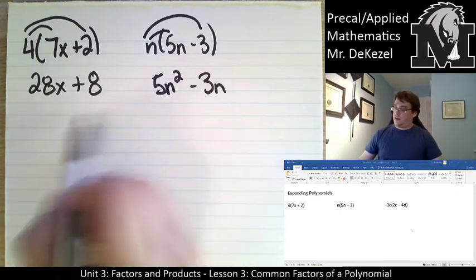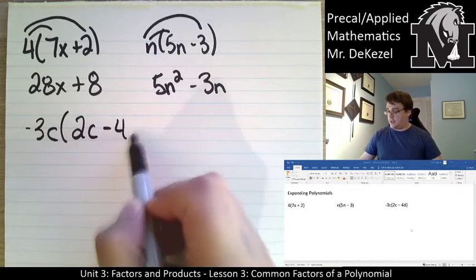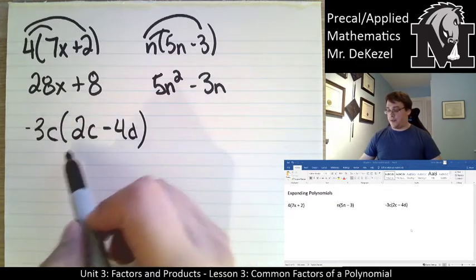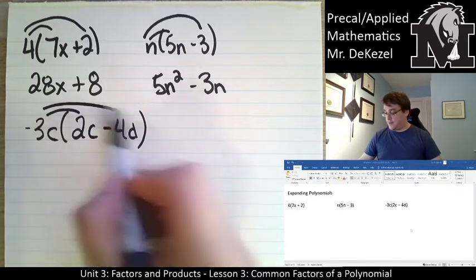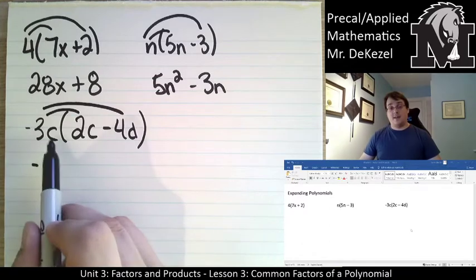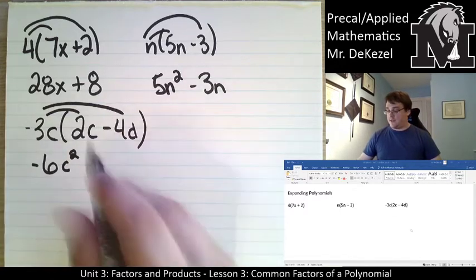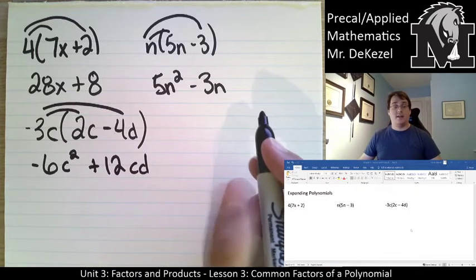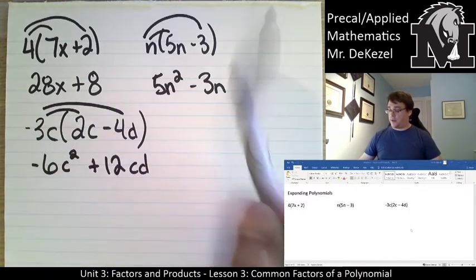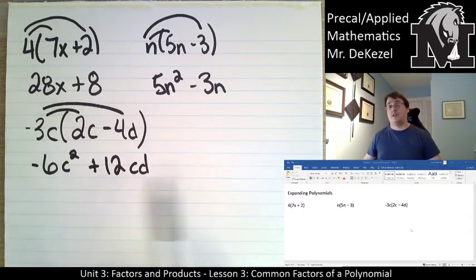We can do the next one: minus 3c times (2c minus 4d). We need to multiply both the numbers and the variables separately. Minus 3 times 2 is minus 6, and c times c is c squared. Then minus 3 times minus 4 is plus 12, and c times d is just cd. So we are multiplying the numbers and the variables, then writing them all in a line.